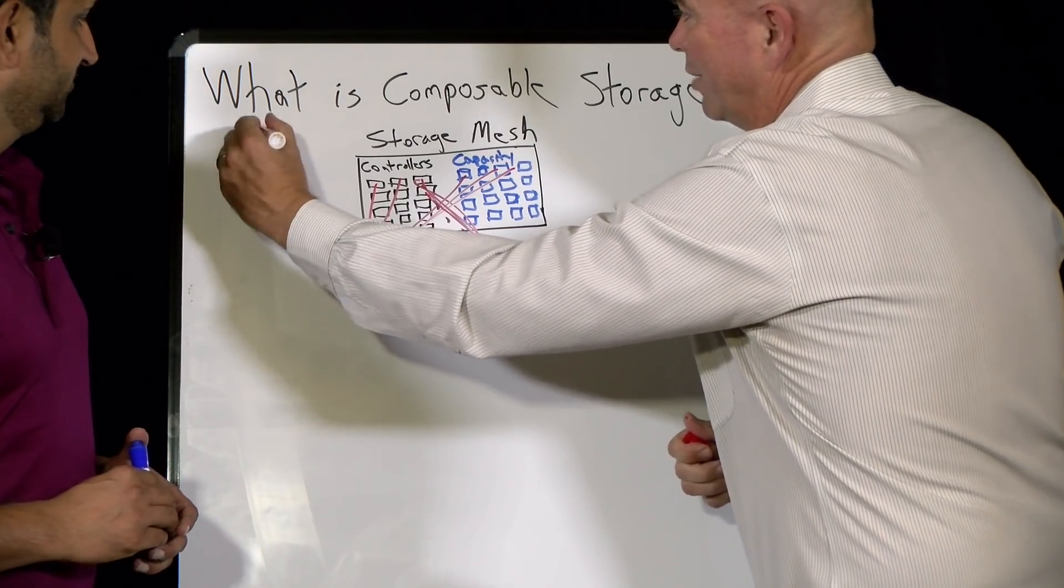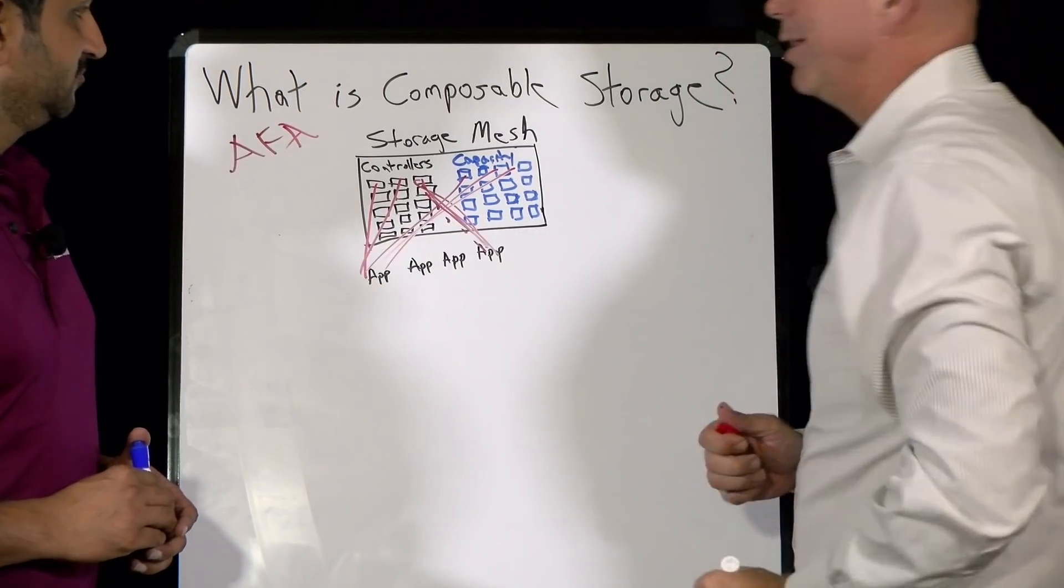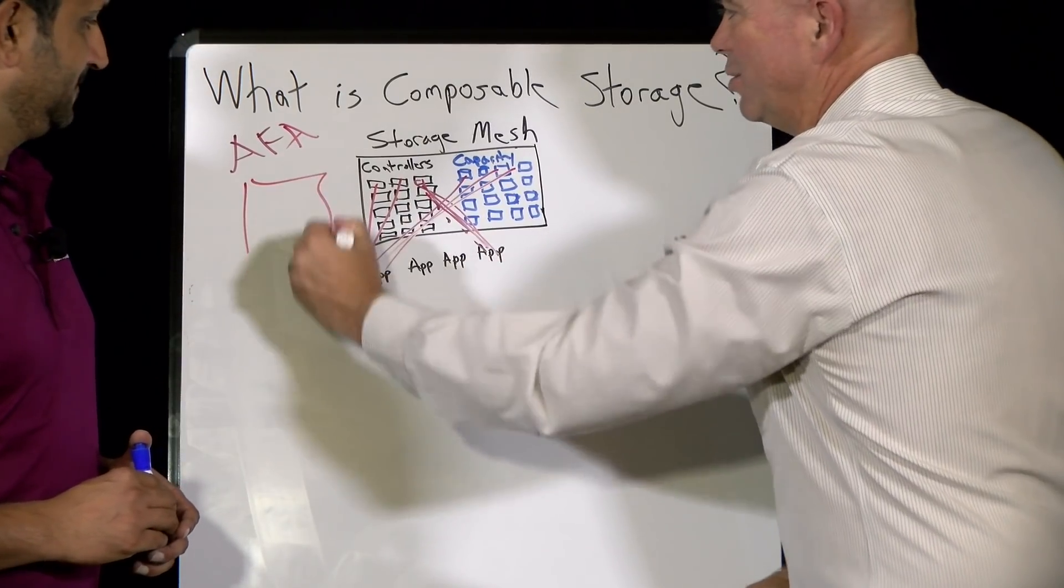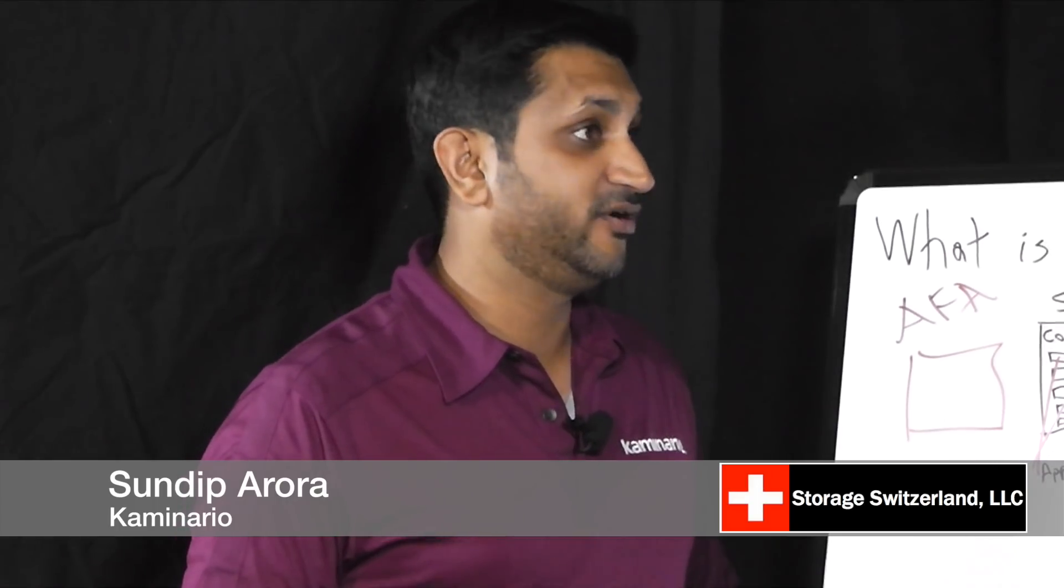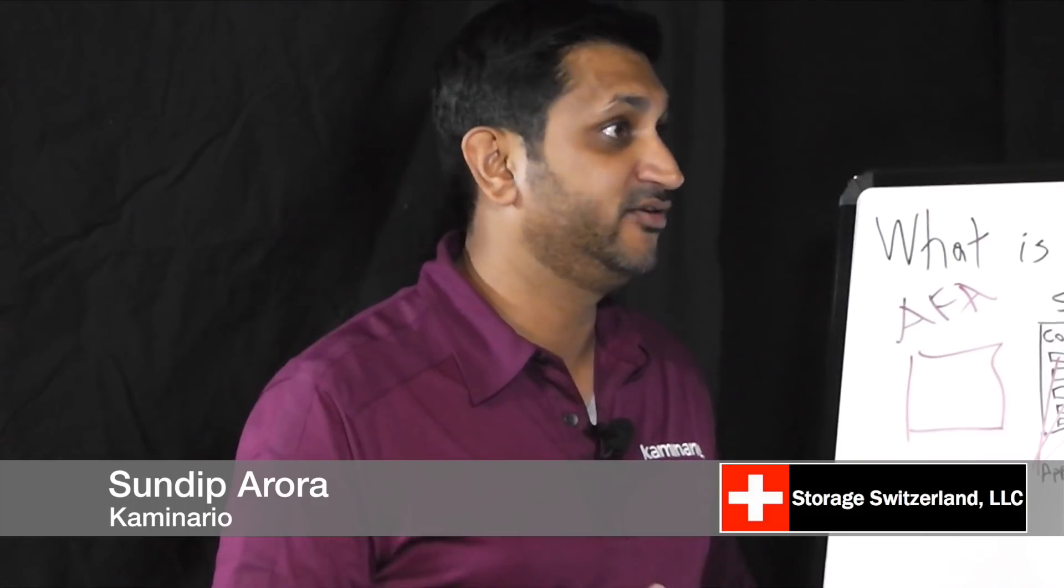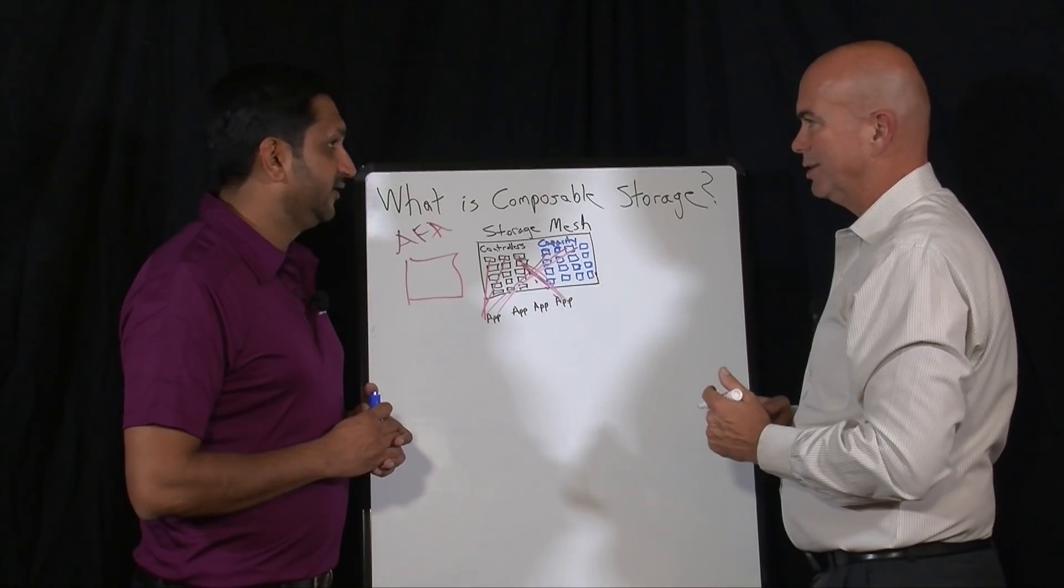So on this side, we've got the all-flash array, which is kind of where we are, state of the art today, but it's really kind of a confined unit, right? It is, a confined unit which comprises of storage controller, compute, memory, capacity, software, all bundled together in a tightly integrated unit. And very hard to divide that up and assign critical capabilities to applications, right? That's right.